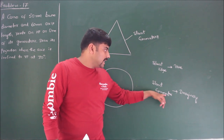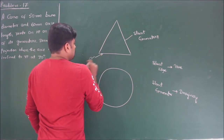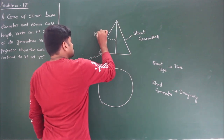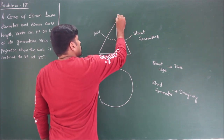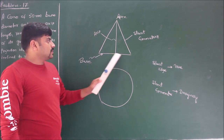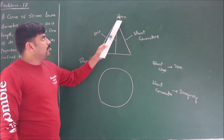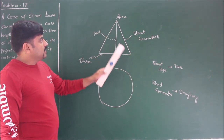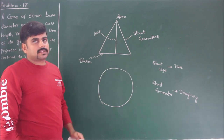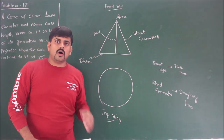For a cone, the circular part is termed as the base. The height of the cone is defined by the length of the axis, and the top part of the cone is termed as the apex. These imaginary lines which we use to represent the cone are termed as slant generators. This is the front view and this is the top view of the cone.